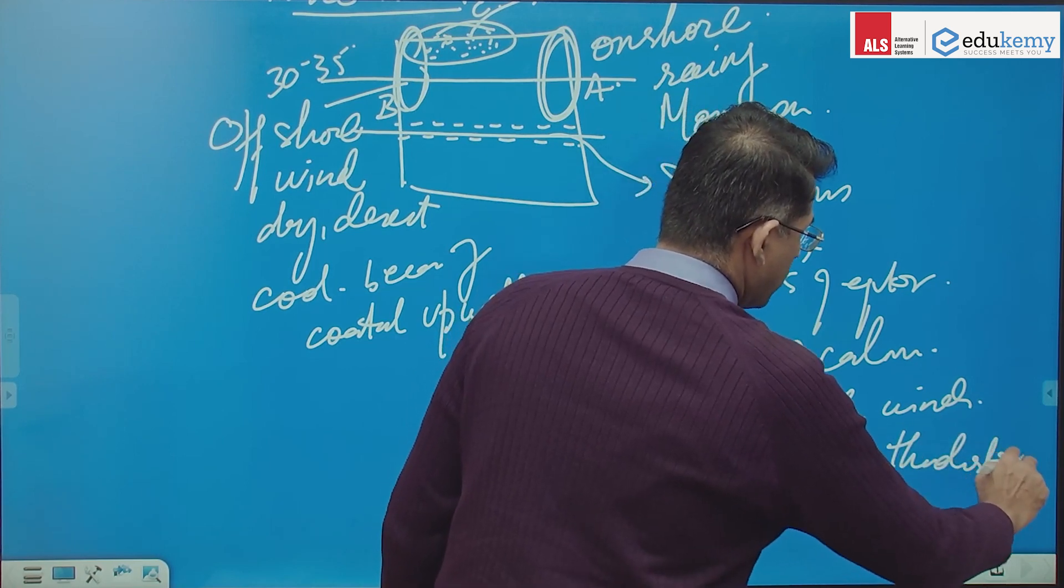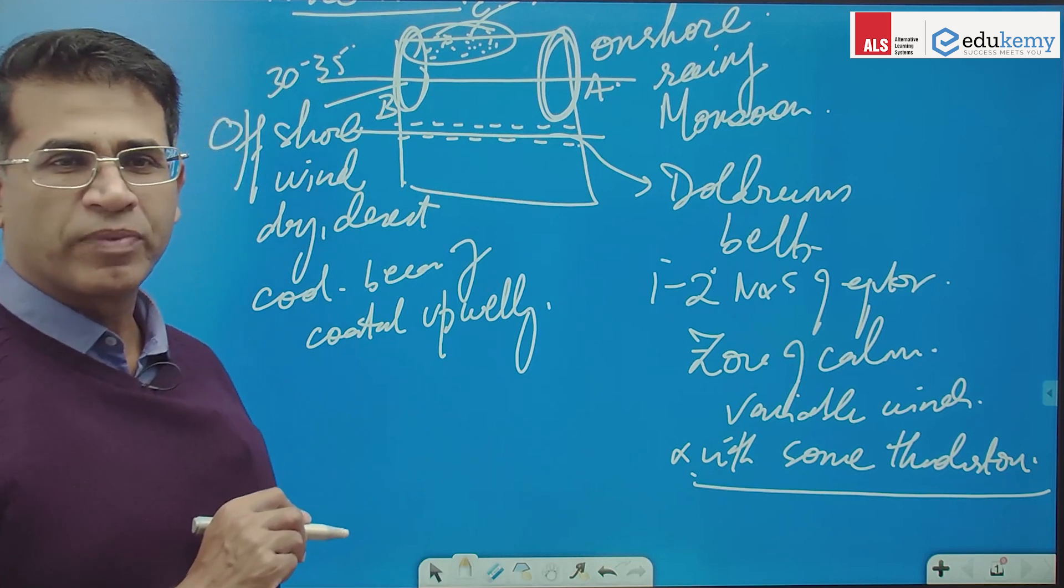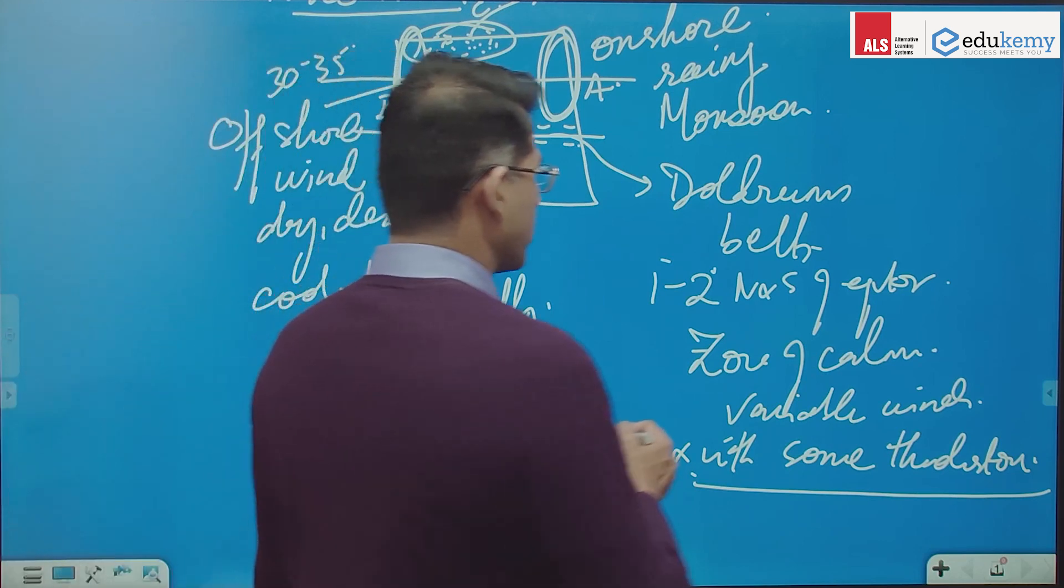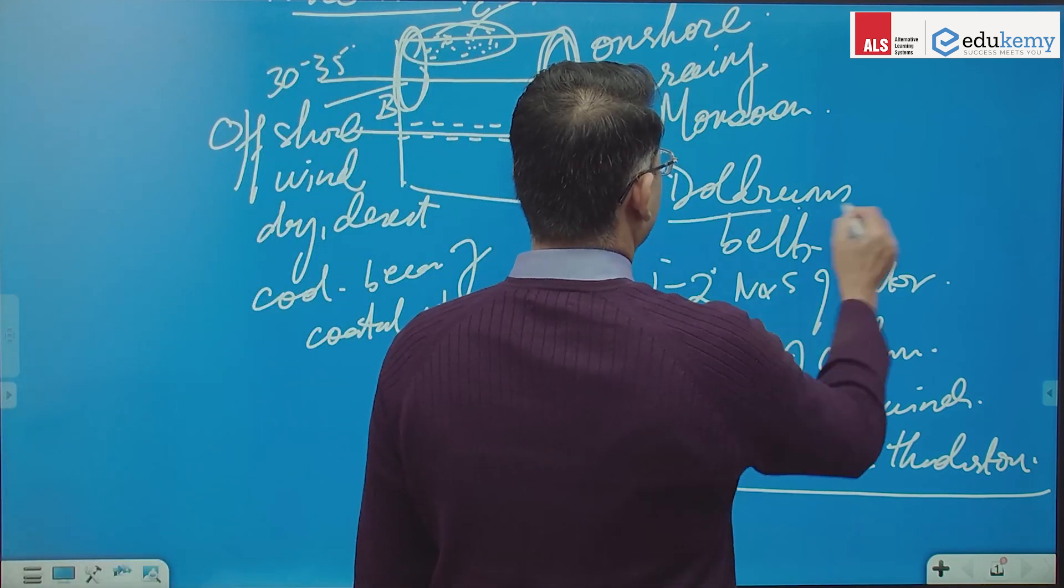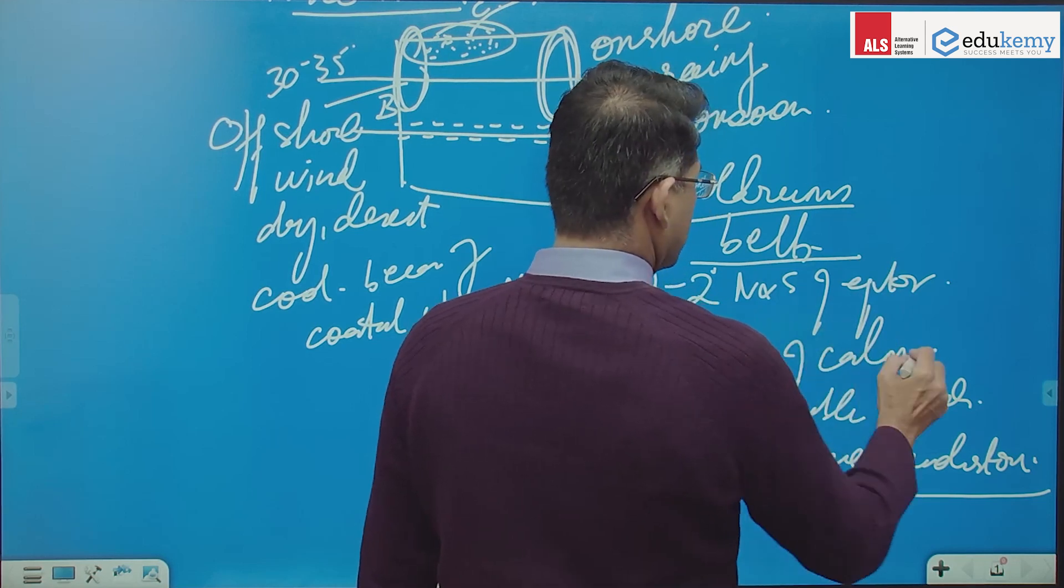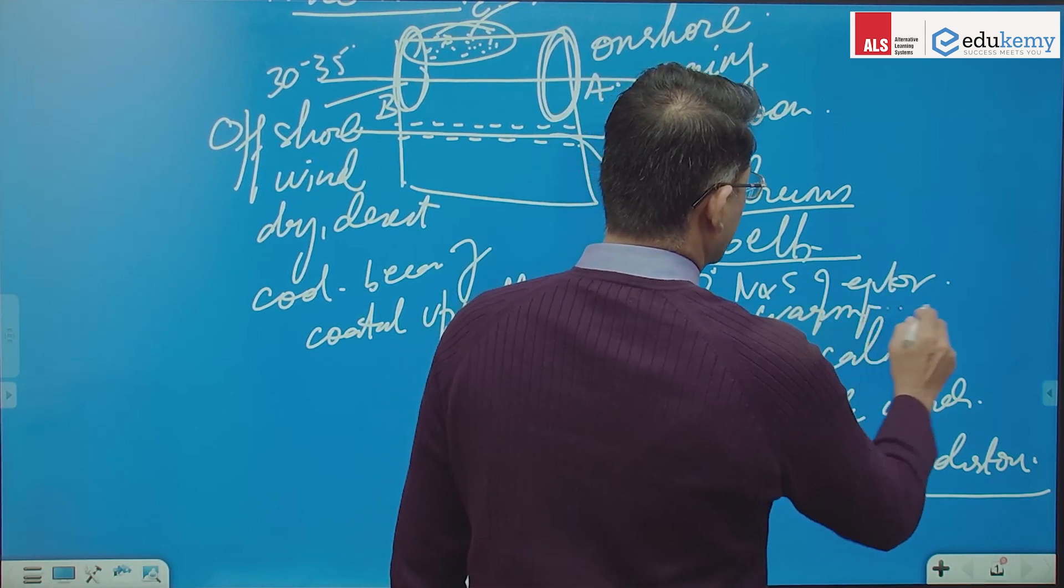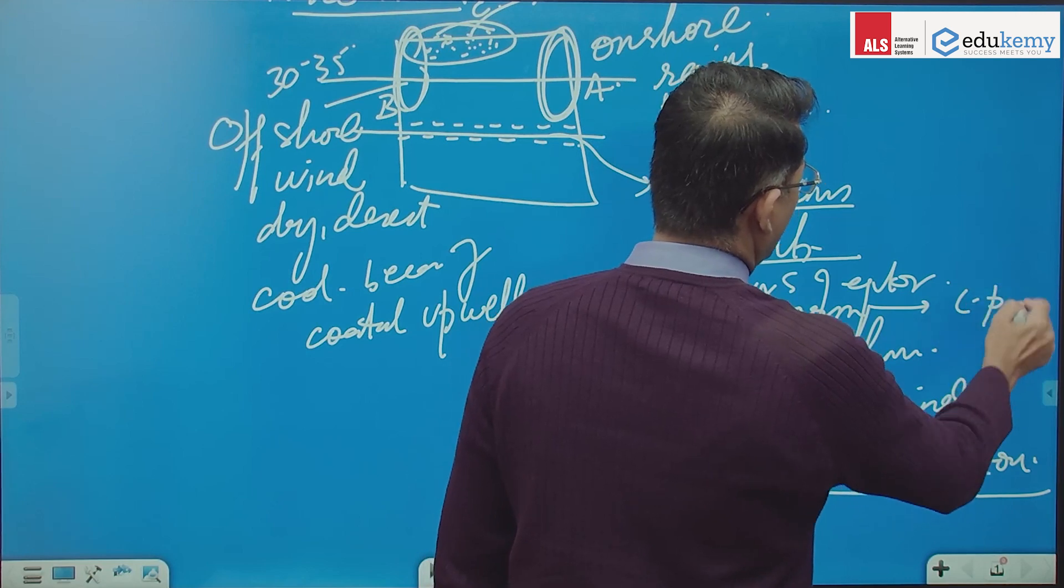why do we have thunderstorms? It is warm, absolutely, this is an area which is also warm area, zone of calm, this is warm, and in general, this is low pressure,